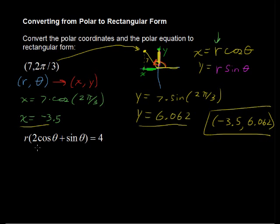Next, the polar equation r(2cosθ + sinθ) = 4. This one actually goes faster, believe it or not, faster than converting the coordinates, and that is because of what we've done over here.